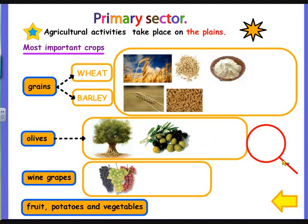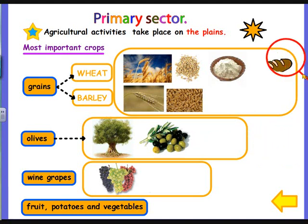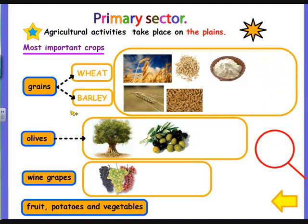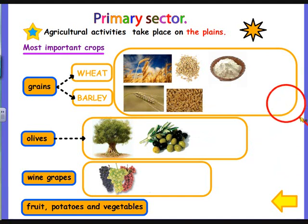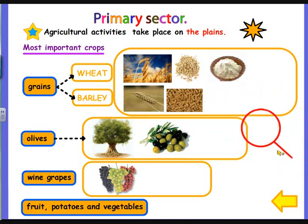Can you think of any product that we manufacture from flour? Yes, the bread. What about barley? This is the plant, very similar to wheat, and this is the grain. What can we manufacture from barley? Beer. Beer comes from barley.